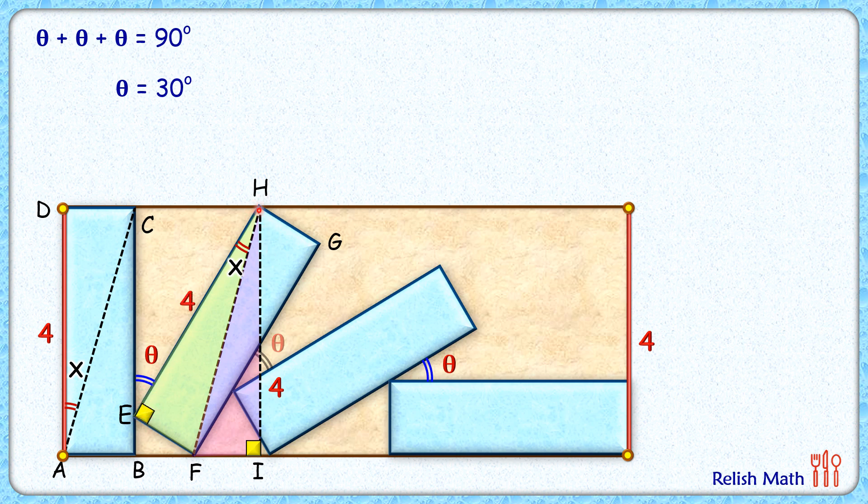The hypotenuse length HF is common in both yellow and pink triangles. So by right angle, hypotenuse, and side (RHS congruency), these two triangles are congruent. Triangle FIH is congruent to triangle FEH. As the triangles are congruent, the corresponding parts are equal.